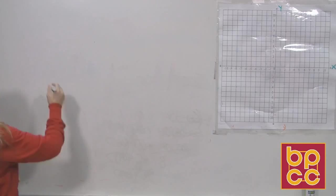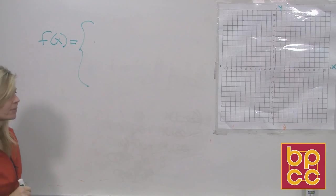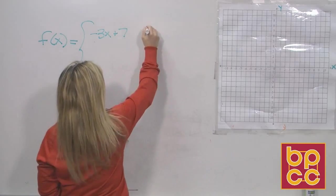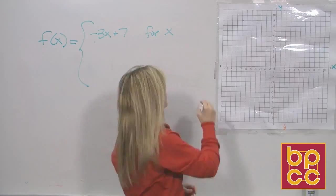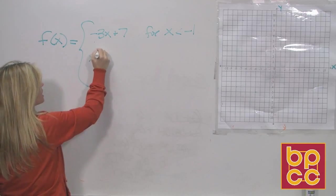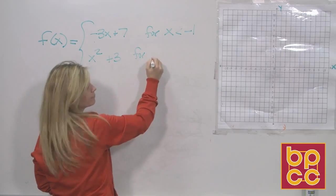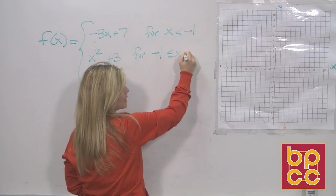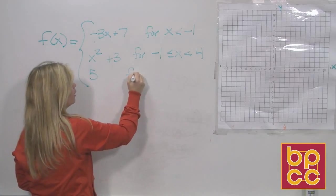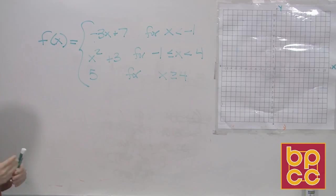So our second says, this is good old algebra, f of x. There's f of x. And if you look, he's in three pieces. It says f of x is negative 3x plus 7 if x is less than negative 1. So that's the first piece of f of x. The second piece of f of x says f of x equals x squared plus 3, for negative 1 less than or equal to x, less than 4. But then there's a third piece. f of x equals 5, for x is greater than or equal to 4. So f of x has three pieces.